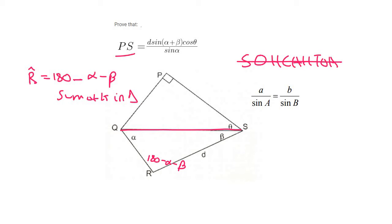So now we can use the sin rule, because we have QS, and that's opposite this angle. And then we have angle alpha, which is opposite D. So we could say QS over the sin of 180 minus alpha minus beta is equal to D over sin alpha.